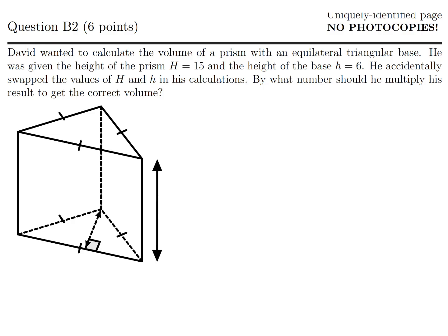David wanted to calculate the volume of a prism with an equilateral triangular base. He was given the height of the prism as H equals 15 and the height of the base as h equals 6. He accidentally swapped the values of h and H, big H and little h, in his calculations. By what number should he multiply his result to get the correct volume? The volume will be calculated by the area of the base multiplied by the height of this figure.